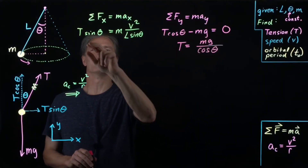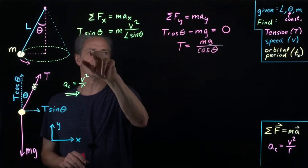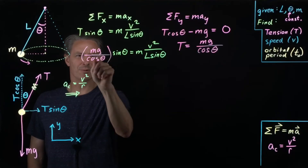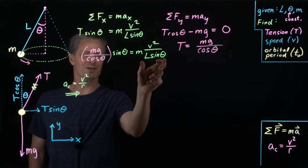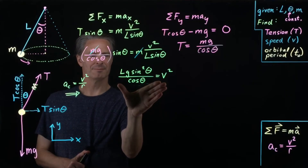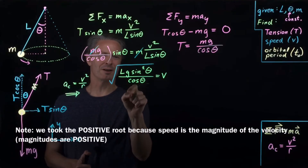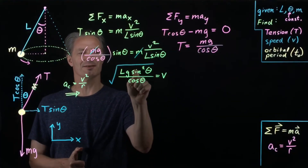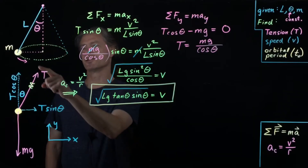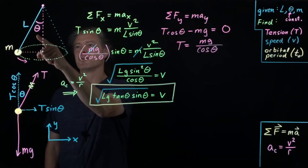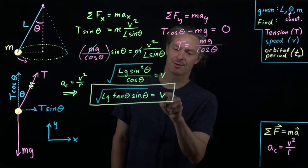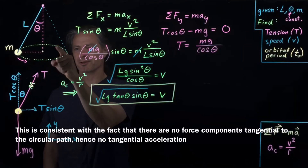Substituting T = mg/cosθ into the x-direction equation, the m cancels from both sides. Multiplying both sides by L sinθ and taking the square root gives the speed v. Simplifying by writing sinθ·sinθ/cosθ as sinθ·tanθ, we get v = √(gL sinθ tanθ). Since theta is constant for a true circular path, tangent theta, sine theta, L, and g are all constants, so the speed is constant — the mass travels in a circle at constant speed.